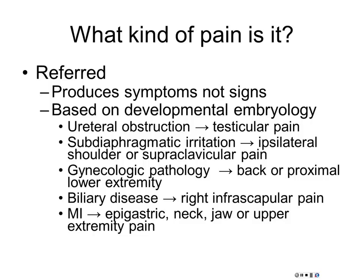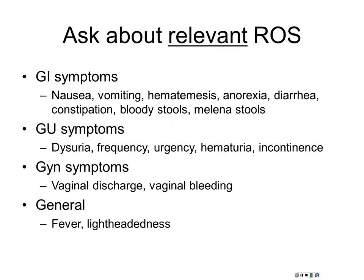Referred pain is almost always based on embryologic relationships. The classic finding is a patient who has cholecystitis with pain in the shoulder — referred pain up the phrenic nerve into the shoulder, that's subdiaphragmatic irritation. Patients with peritoneal obstruction can have referred pain in the flank. Gynecologic pathology can refer to the low back, same with pancreatic or lower abdominal vascular pathology, and biliary disease with infrascapular pain. And obviously the non-classical MI — patients can have vague pain in their chest, upper abdomen, or really anywhere as referred pain.